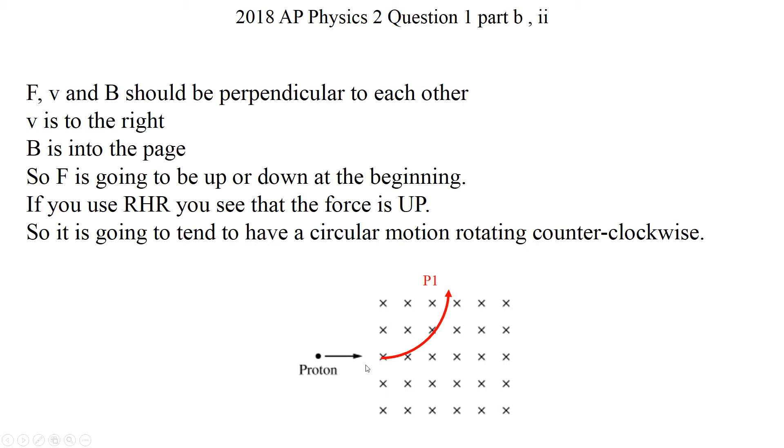So V, velocity of the proton is to the right. And magnetic field is going into the page. Then magnetic force is going to be up or down. So how are we going to figure out if it's going to go up or down? If you use the right-hand rule, B is going into the page, V is going to the right. Then you're going to see the third vector is going to go up.